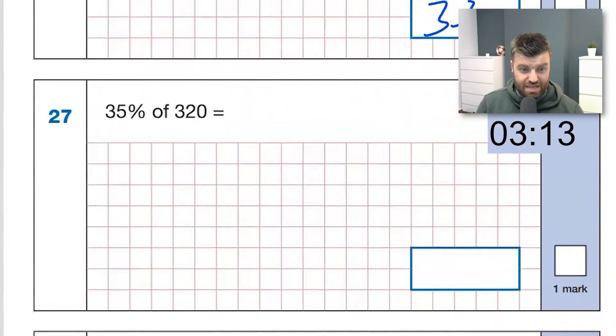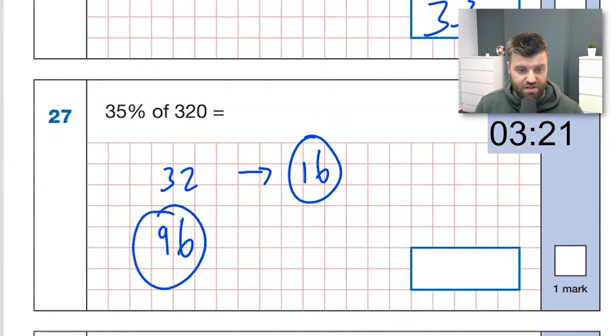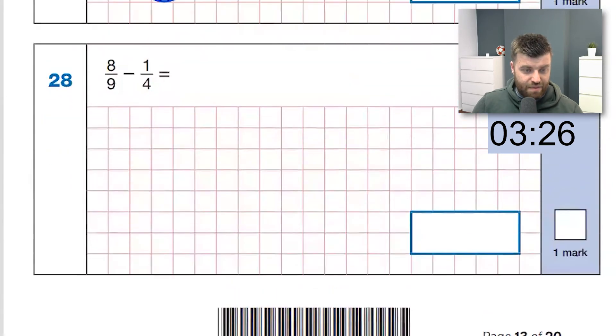Question 27. 35% to 320. Well, 10% is 32, which means 30% is three times that, which is 96. Five percent is going to be half of that, which is 16. Add on five to the 30. We get 12 and we exchange over 112 is our answer for that one.